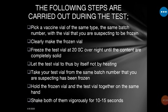Step six: hold the frozen vial and the test vial together in the same hands — hold both vials in your hands, the suspected vaccine A and the test vaccine B from the other clinic.